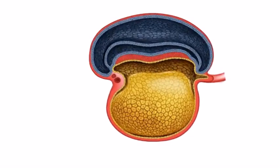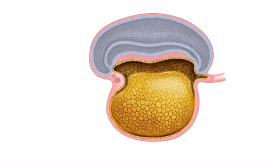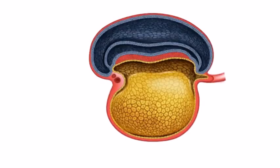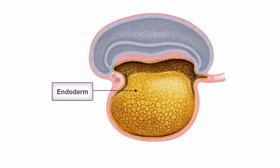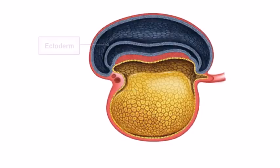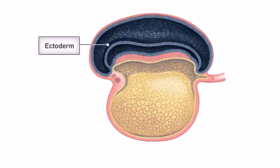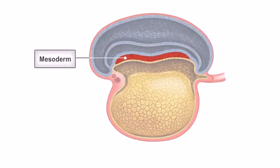The cylinder consists of three layers derived from the trilaminar embryonic disc. These are the endoderm, the innermost layer, the ectoderm, the outermost layer, and the mesoderm, located in between.